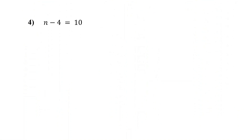Now, what if a number is subtracted from the variable? The goal is still the same: to isolate the variable using the opposite operation. In this example, 4 is being subtracted from n. To get n by itself, we do the opposite of subtraction — we add 4. And we add to both sides to keep the equation balanced. Negative 4 plus 4 is 0; they cancel each other out, leaving n by itself. On the right, 10 plus 4 is 14. So the solution is n equals 14.